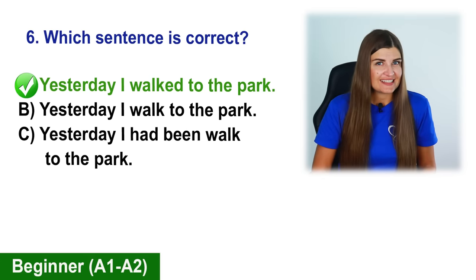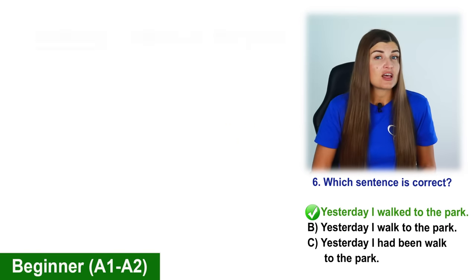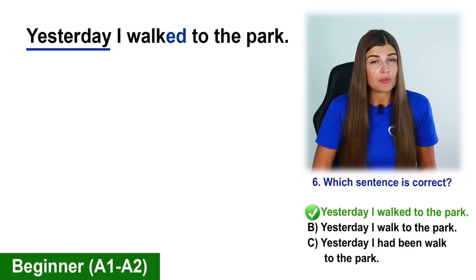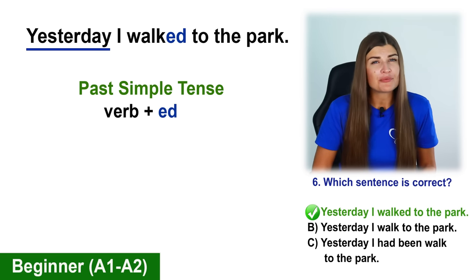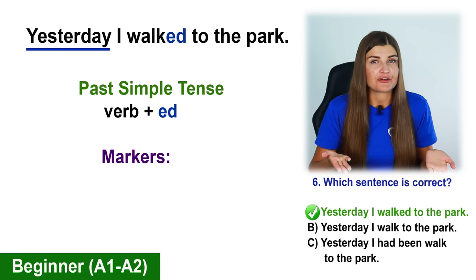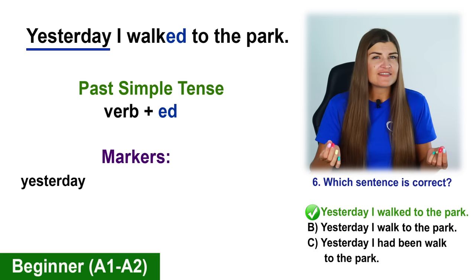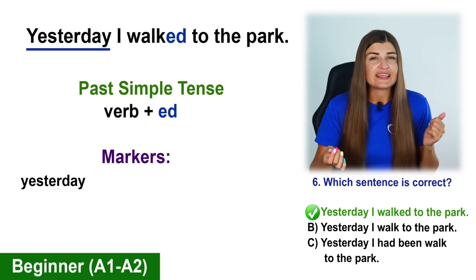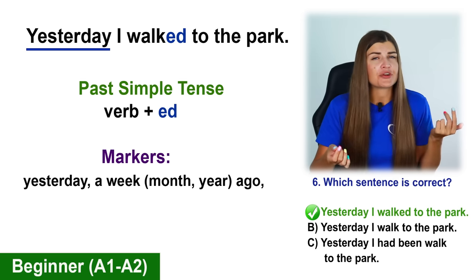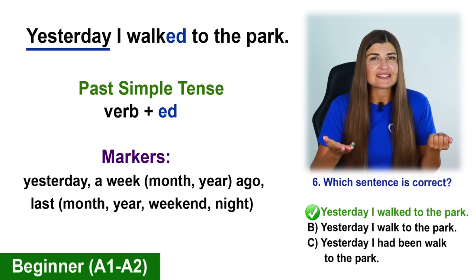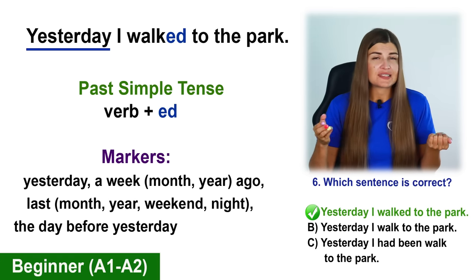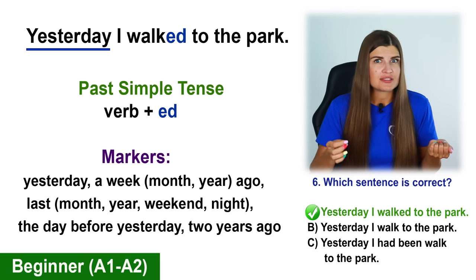The correct sentence is A: Yesterday I walked to the park. Walked is the past simple form of the verb to walk. For regular verbs, the past simple is formed by adding –ed to the verb infinitive. Here we have a marker — the word yesterday. When we have such markers as yesterday, a week or a month or a year ago, last month, last year, last weekend, last night, the day before yesterday, two years ago — then we use past simple.